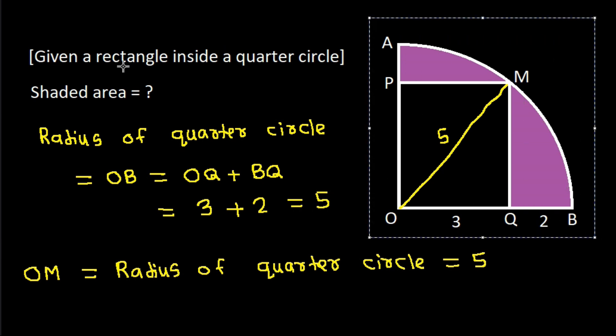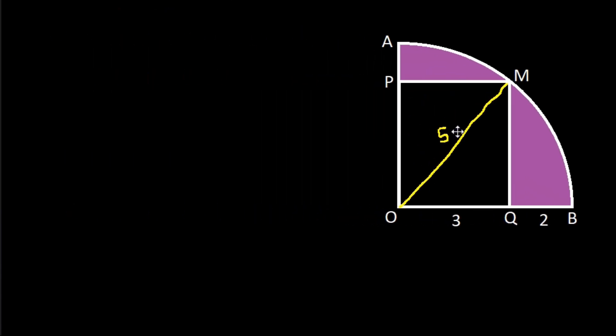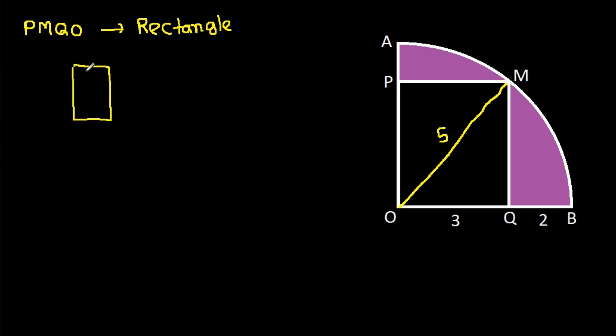Now we know that PMQO is a rectangle. In any rectangle, all four angles are 90 degrees. So this angle will be 90 degrees.